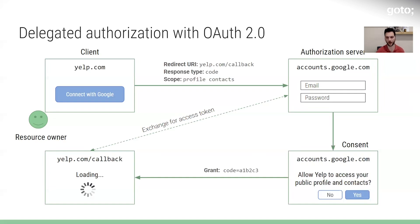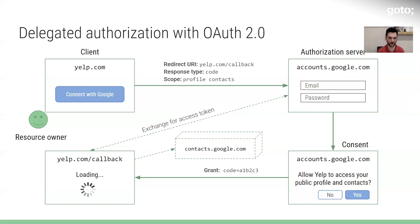The client can then go talk to whatever API it was intending to reach — the Google Contacts API, for example — and say, 'Normally if I asked for Nate's contacts, you'd tell me to get lost, but because I have this access token, it's okay.' The Google Contacts API sees the access token, checks that it's valid, hasn't expired, and hasn't been forged or tampered with, and then says, 'You do have permission to see Nate's contacts because he said you do. Here you go.'